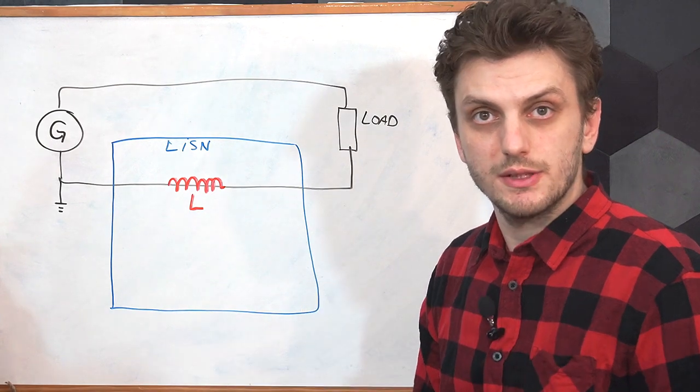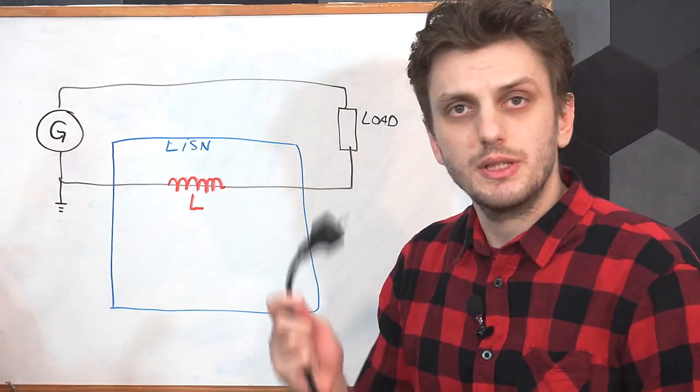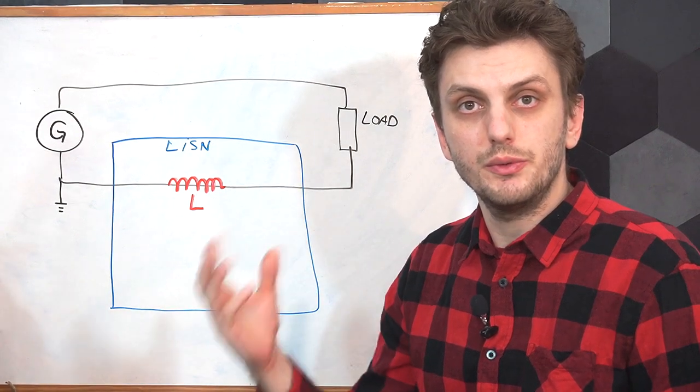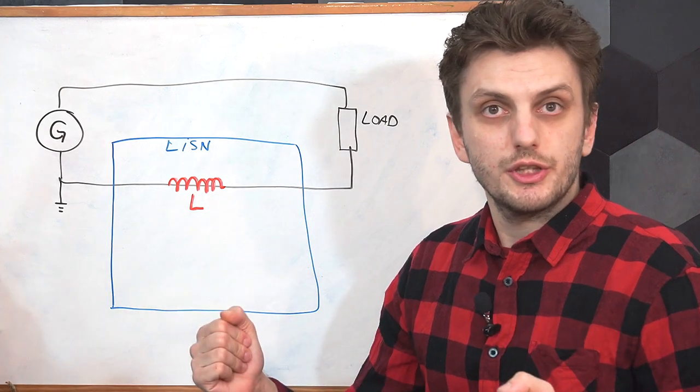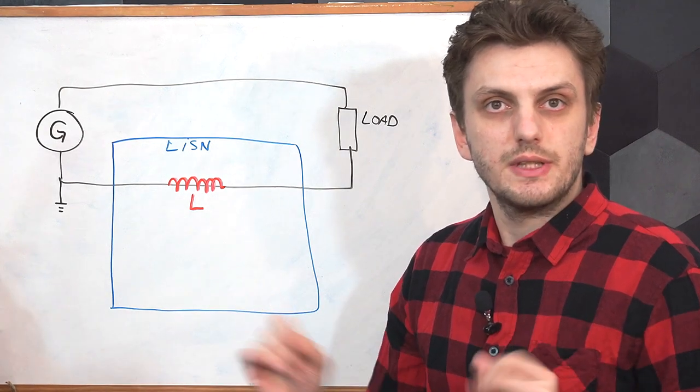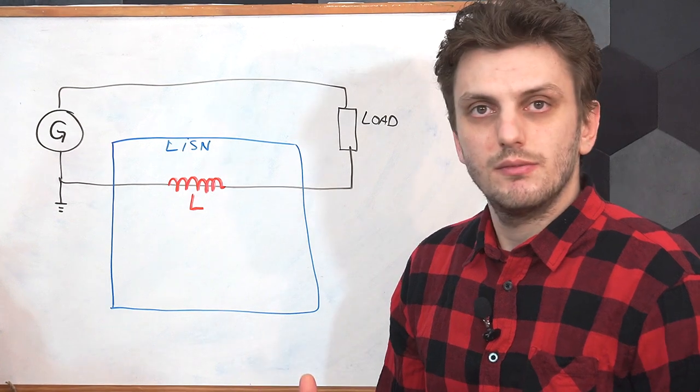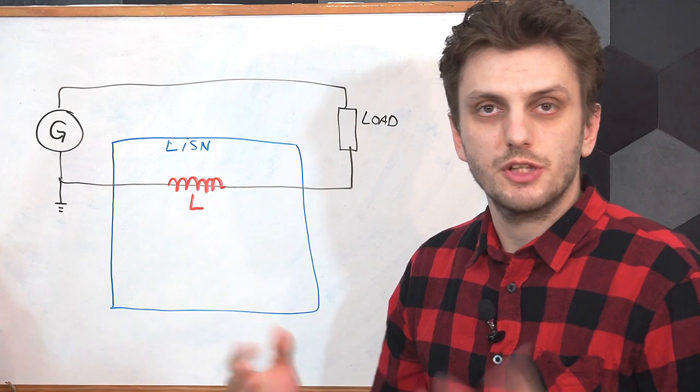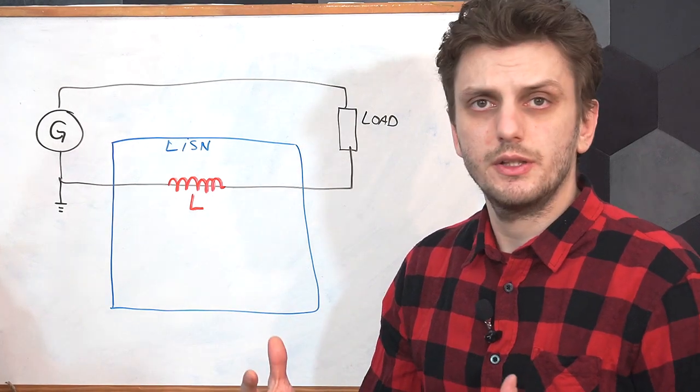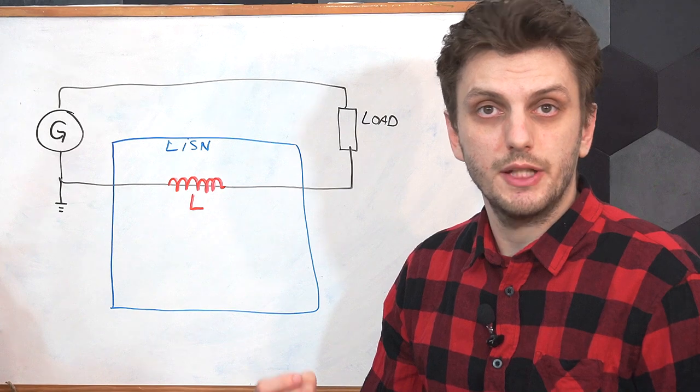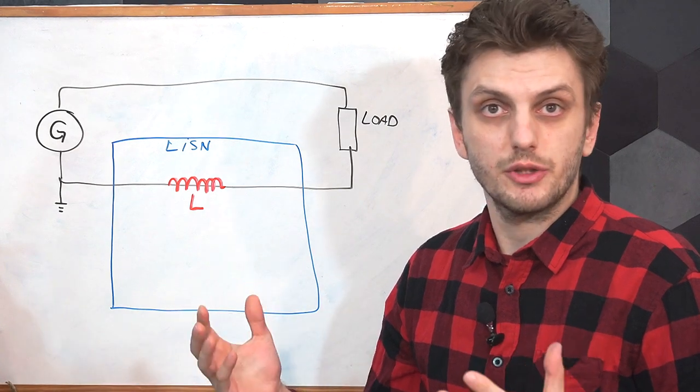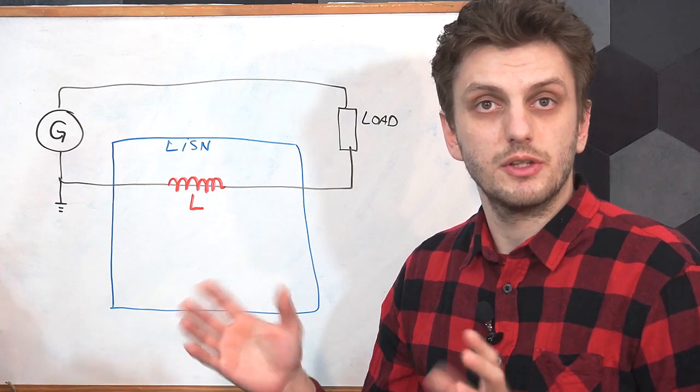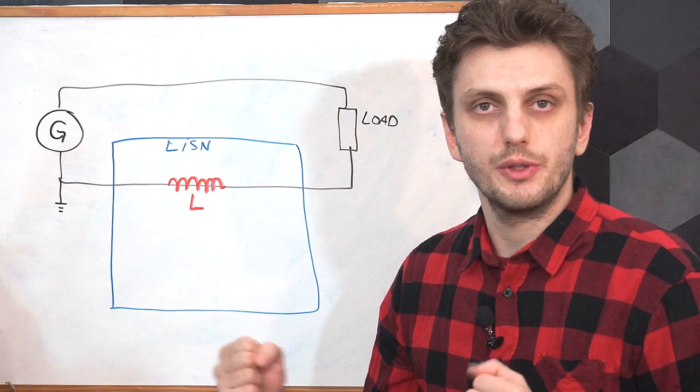Now, the value of this inductor has to do with the use case. So in things like AC power distribution, the length of cable between your unit and your local generator, so your local power transformer, is in the order of tens of meters. So in that case, a common inductor value is 50 microhenry, which is equivalent to about 25-30 meters of cable. On the other hand, in battery-powered applications, so like in automotive, cable lengths are much shorter, so you only have a few meters of cable, and there you will be using roughly 5 microhenrys, which is equivalent to about 3 meters.